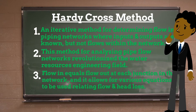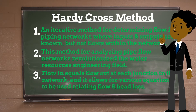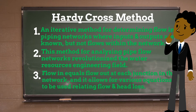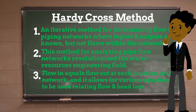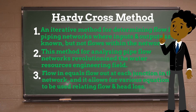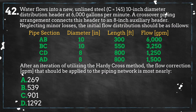The Hardy Cross method assumes that the flow going in and out of the system is known, and that the pipe length, diameter, roughness, and other key characteristics are also known or can be assumed. The method also assumes that the relationship between flow rate and head loss is known, but does not require any particular relation to be used. In the case of water flow through pipes, a number of methods have been developed to determine the relationship between head loss and flow, and the Hardy Cross method allows for any of these relationships to be used.